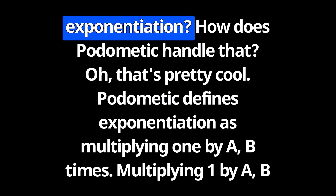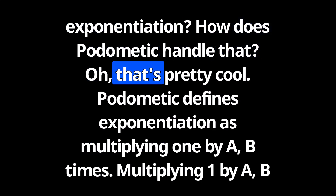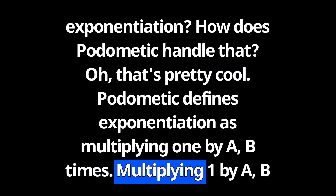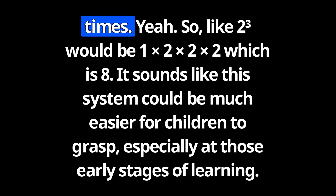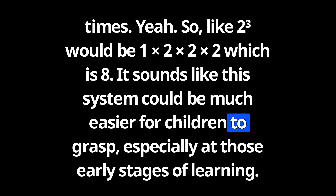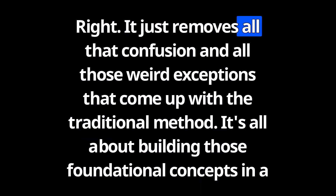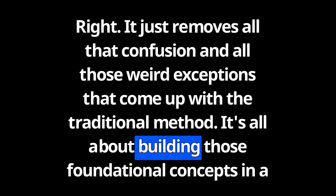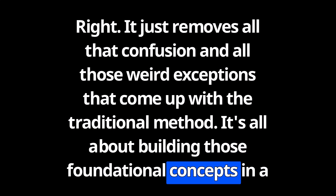What about exponentiation? How does Podomedic handle that? Podomedic defines exponentiation as multiplying one by A B times. So two to the power of three would be one times two times two times two, which is eight. This system could be much easier for children to grasp, especially at those early stages of learning. It removes all the confusion and weird exceptions that come up with the traditional method.